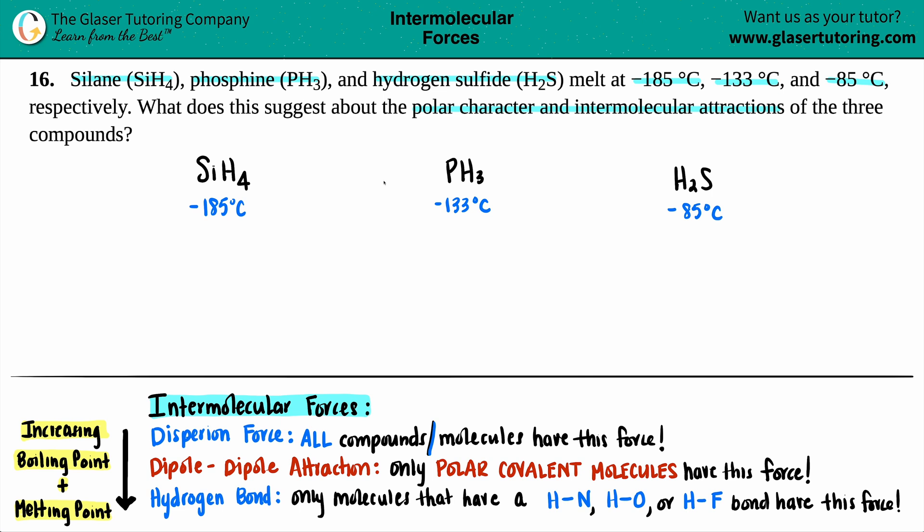As we're going from left to right, we can say that SiH4 has the lowest melting point. Negative 185 is the lowest number out of these three, and negative 85 is the highest. We know that SiH4 has the lowest melting point and H2S has the highest melting point.